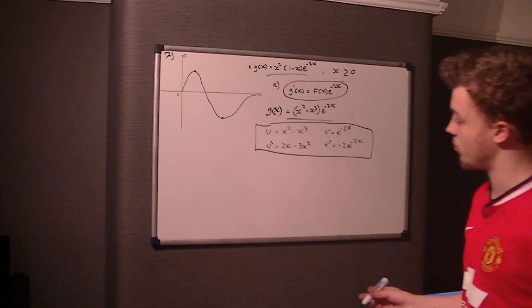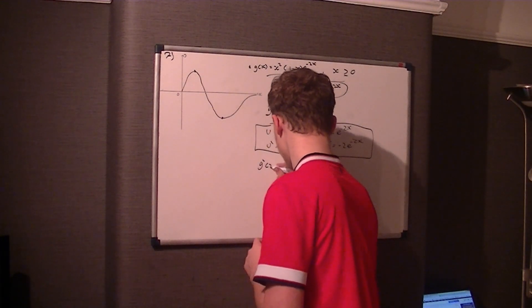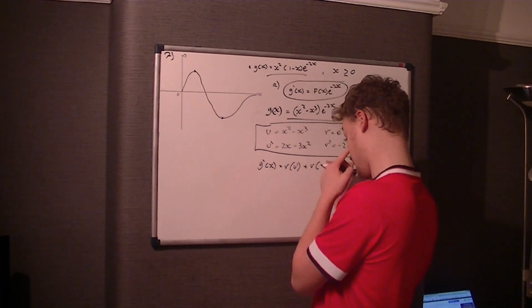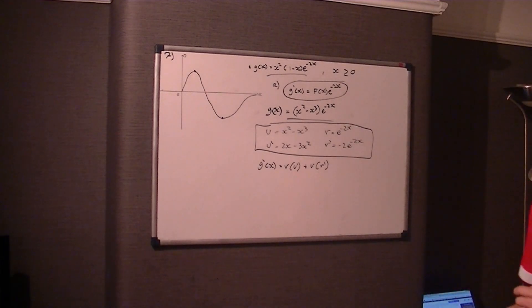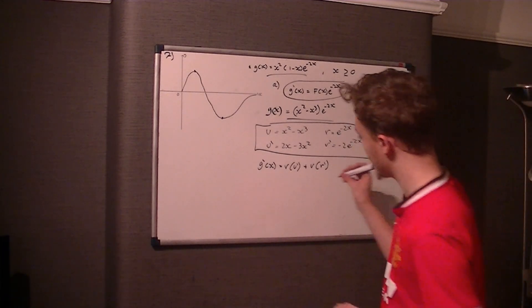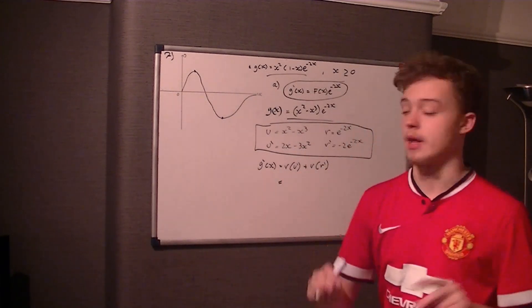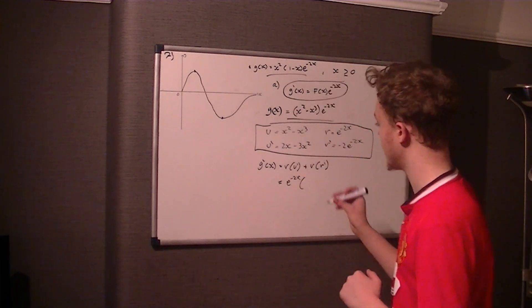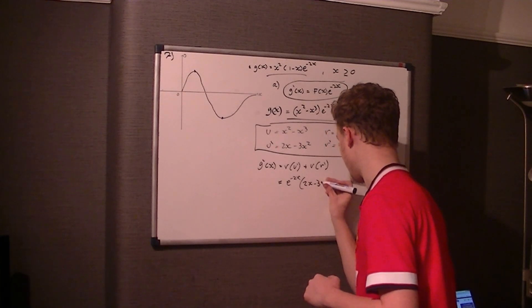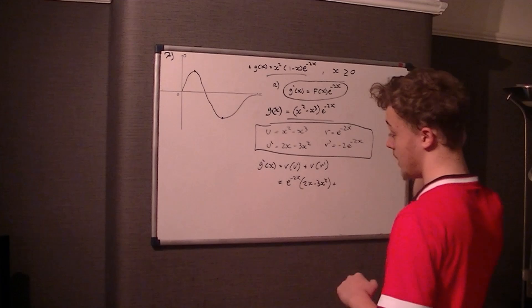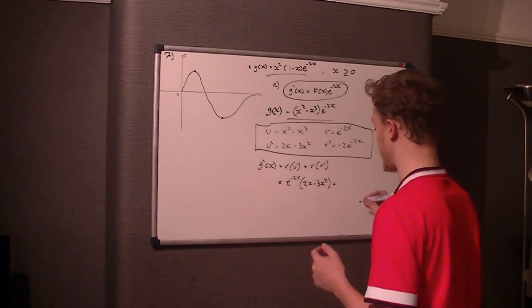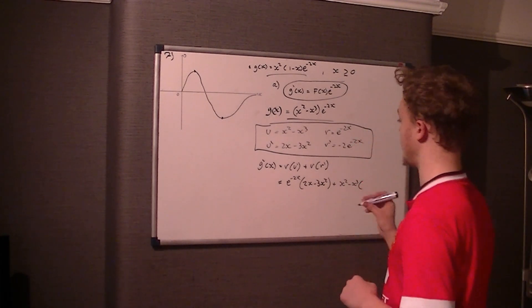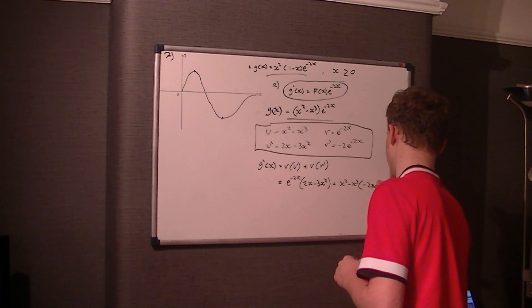Then I'll start by going g dash of x is v u dashed plus u v dashed. I like putting it that way around because that's the way around in the quotient rule. But for this particular question it doesn't matter. So the first one is v u dashed, so it's e to the negative 2x times u dashed which is 2x take 3x squared, plus u v dashed, u being x squared take x cubed, times v dashed which is negative 2 e to the negative 2x.